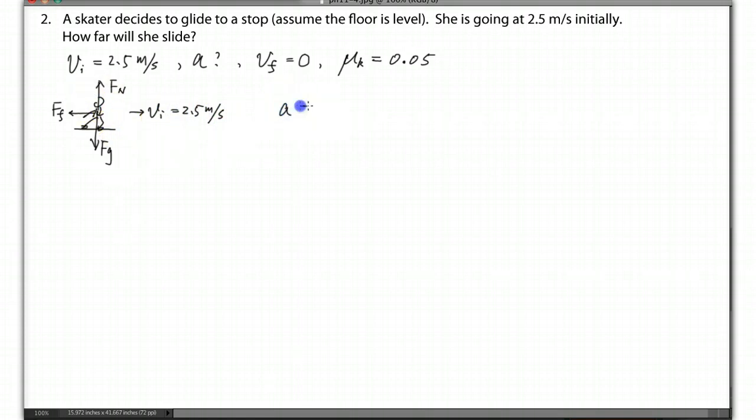So from here, you can see the acceleration will be the net force, which is actually the friction here. Let me put a net force for now. So net force, that's Newton's second law, divided by the mass of the skater. Don't worry about you don't know the M.